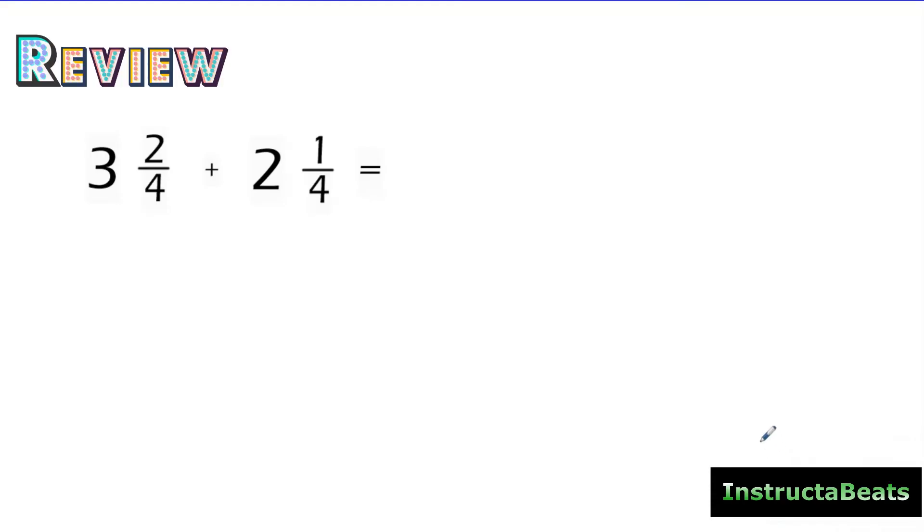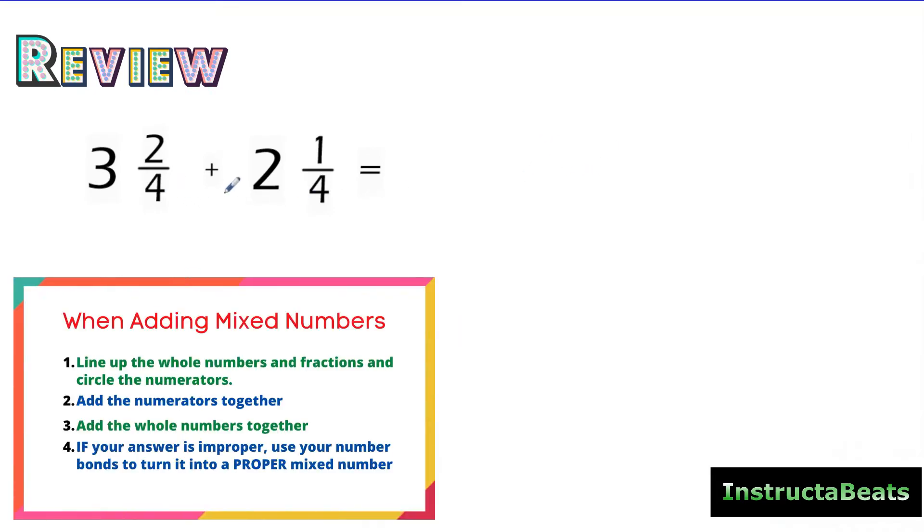Now let's take a look at another skill we learned in a previous lesson, how to add mixed numbers. Again, our denominators are already the same. When we add mixed numbers, all we do is we line them up vertically. We're going to circle our numerators.